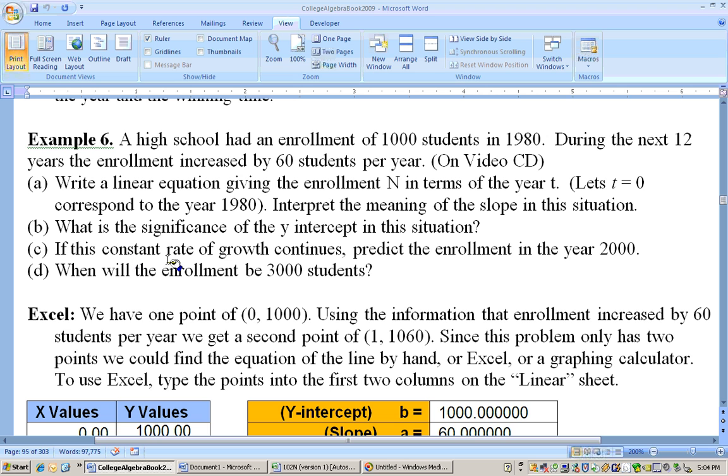Now, this says if this constant rate of growth continues, predict the enrollment in the year 2000. Well, we would actually have the equation, we would have the equation y equals 60x plus 1,000. So, the year 2000 is 20 years after the year 1980. So, you would just substitute 20 in for the x. 60 times 20 is 1,200. And 1,200 plus 1,000 is 2,200.